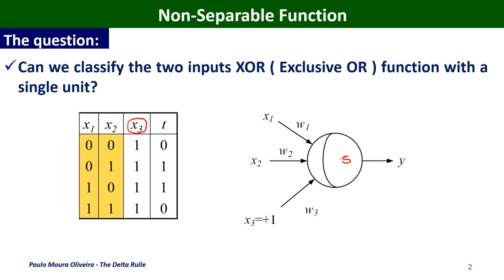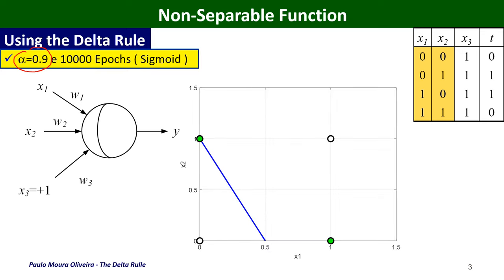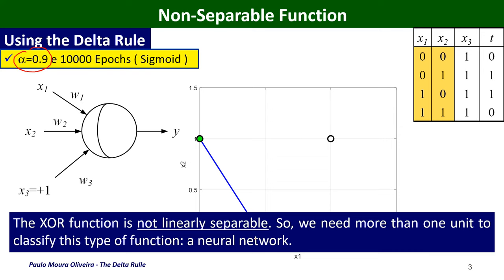If we use this neuron and run a program with the delta rule, using a learning rate of 0.9 and 10,000 epochs with the sigmoidal function, we obtain — and this is one of the trials — that we cannot obtain a line that can classify these two classes. These are called non-separable functions, and the conclusion is that we need more than one unit to classify these types of functions.